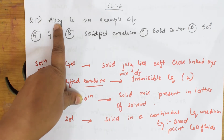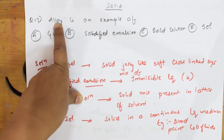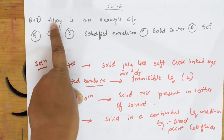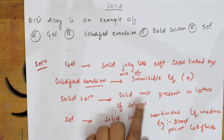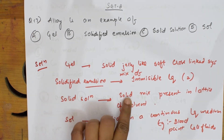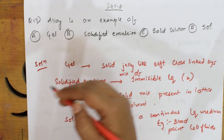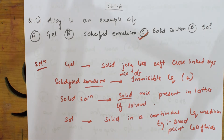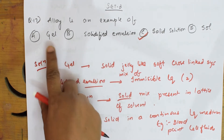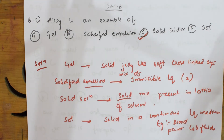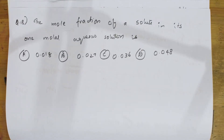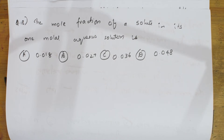So here they asked for the correct option. I know the definition: alloy is a mixture of two or more solids. What is solid solution? Solid mixed in lattice of solvent — a solid mixture. So this is the answer. Solid solution is the correct option for alloy. Sol is solid in liquid; emulsion is liquid in liquid; gel is a jelly-like system. So alloy is a solid solution, a mixture of two or more metals.